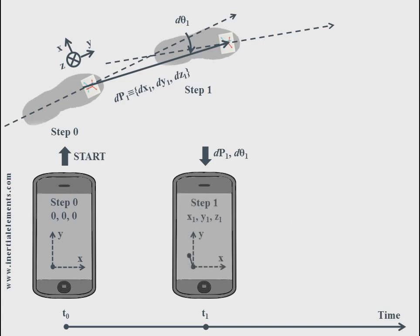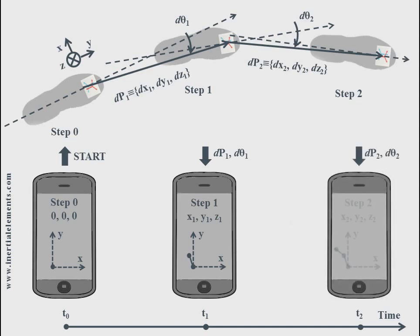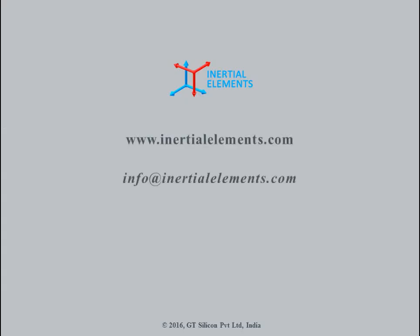The platform constructs the path in the Global Reference Frame. Similarly, DP2 and D-Theta2 are transmitted at the next detected step to construct the path. For more information, please visit inertialelements.com.